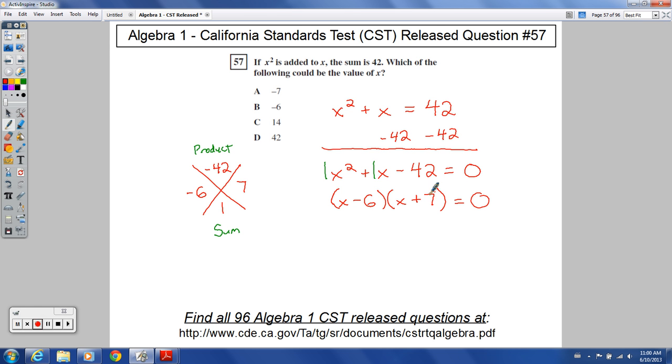So x minus 6, x plus 7. If this binomial factor was equal to 0, 0 would become this whole thing in parentheses times, it wouldn't matter what you had here, because 0 times whatever this is would still be 0. The 0 product property is what a lot of books will refer to this as.